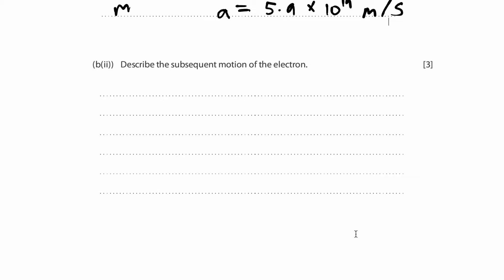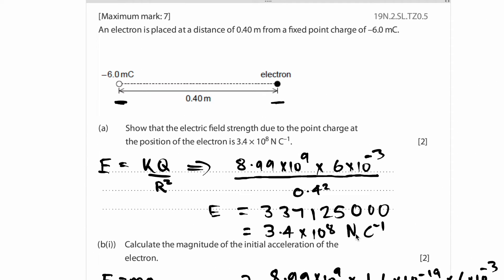Describe the subsequent motion of the electron. Now, how do we do this? Well, let's go back to our diagram, shall we? Yeah, that's our diagram right there. So why is this diagram useful, you may ask?